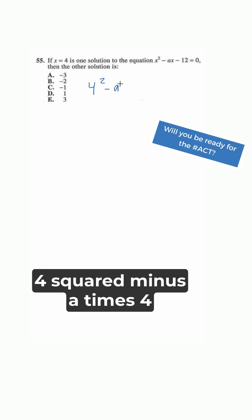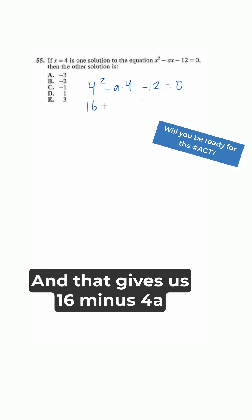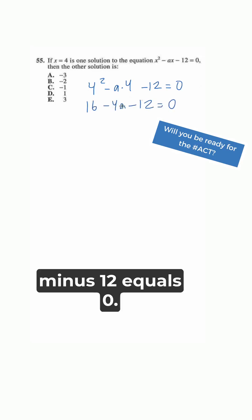4 squared minus a times 4 minus 12 equals 0, and that gives us 16 minus 4a minus 12 equals 0. We can combine 16 and negative 12 to get 4.